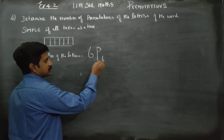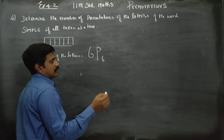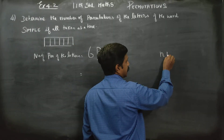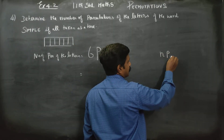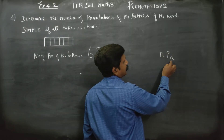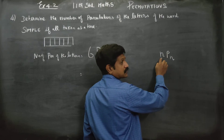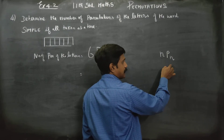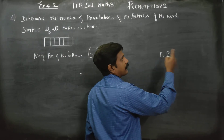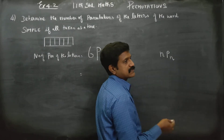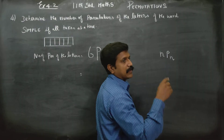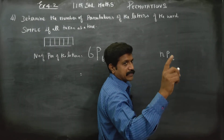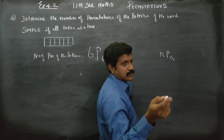Available letters is also 6, so 6P6 gives us the total number of arrangements. 6P6 — there is a ready-made formula. If nPn, where n is the same number on both sides: nPn equals n factorial divided by (n minus r) factorial, which simplifies to n into (n-1) and so on.